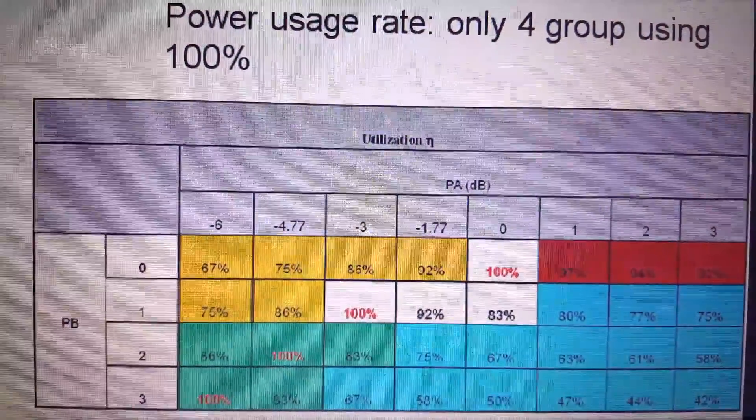PA values are normally: minus 6, minus 4.77, minus 3, minus 1.77, 0, 1, 2, and 3. For PB, the second parameter, we normally use 0, 1, 2, or 3. There are different combinations of PB and PA values we use to calculate the reference signal power. There is a specific table for different combinations of PA and PB values, and we go for the combination where we have 100% utilization of the reference signal power.